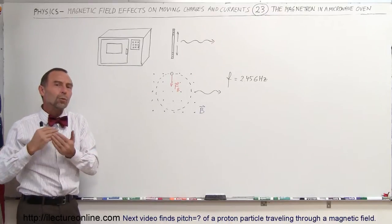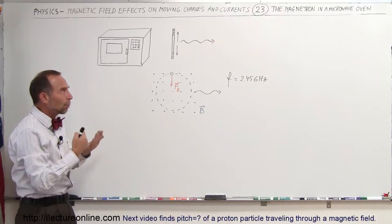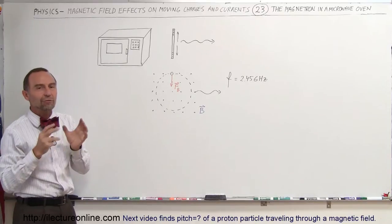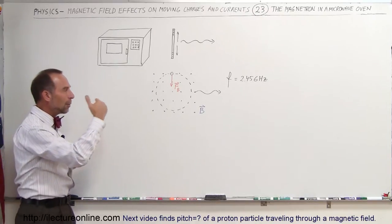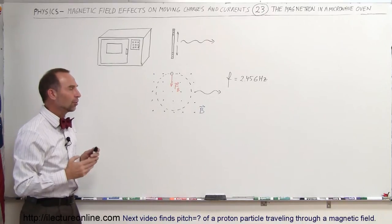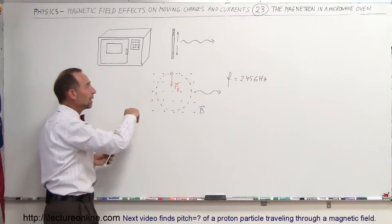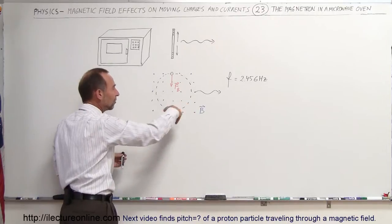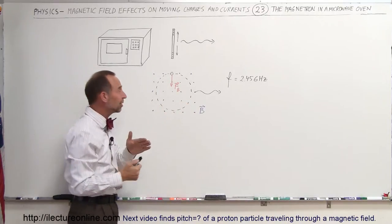But microwave ovens don't work that way. They work with what we call magnetrons. A very strong magnet and allowing electrons to rotate or move in circular paths. Now we already knew that, because when electrons move in circular paths, that's caused by the magnetic field.